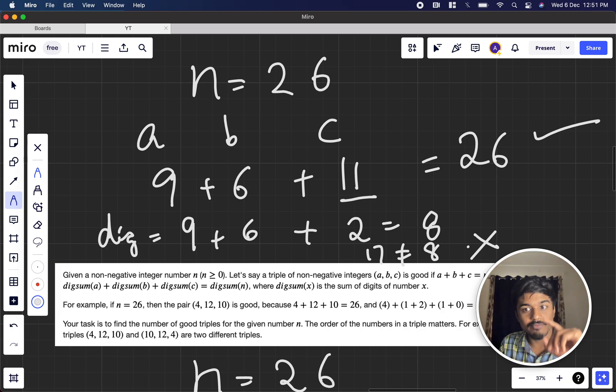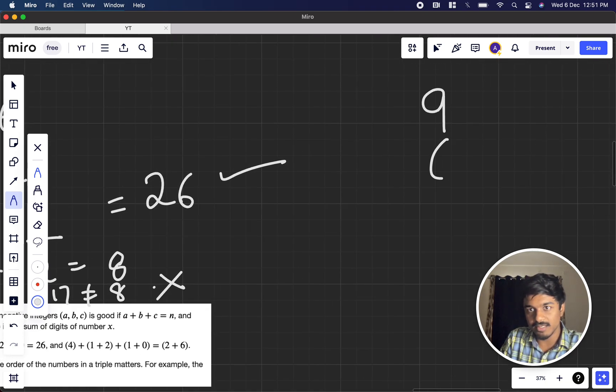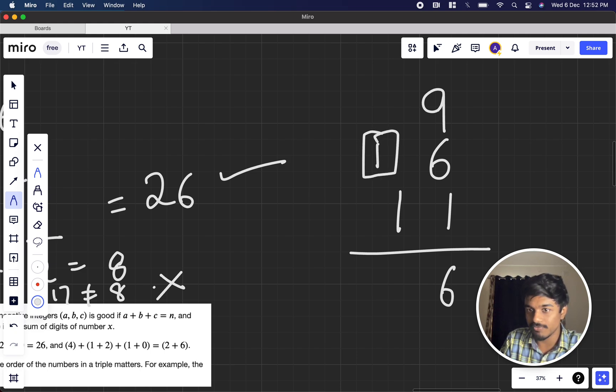We have to understand why this is not working but the below one is working. If you observe closely, you see 9 here, 6 here, normal addition. 9 plus 1 is 10, 10 plus 6 is 16, and as you see there's a carryover that's coming here. Then only this 2 is formed. So if a carryover comes, where can you place the carryover? Should you place here, here, or at last? We don't know.